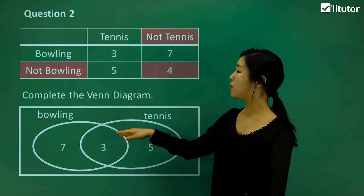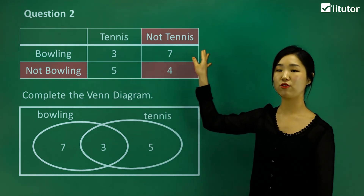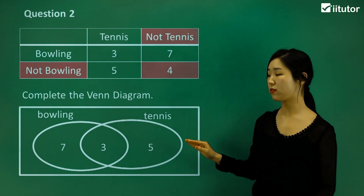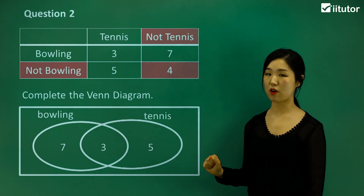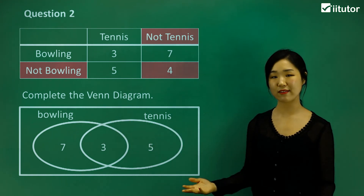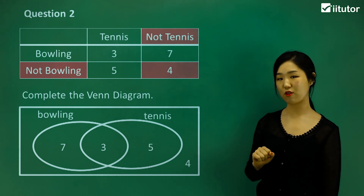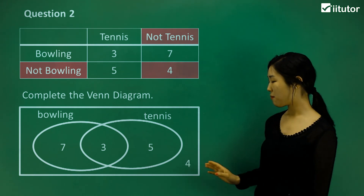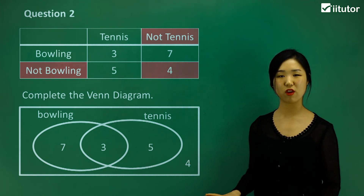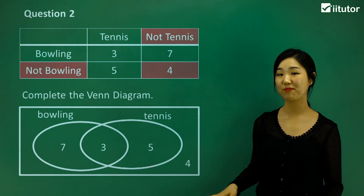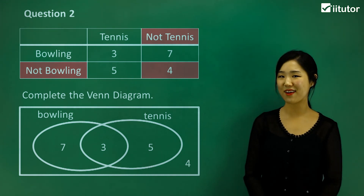Finally, those who don't do bowling and don't do any sports at all should not be in any of the circles — they should be outside the circles. So the four goes outside the circles, but still inside the box. Those are the odd ones out. That's how we relate two-way tables and Venn diagrams.